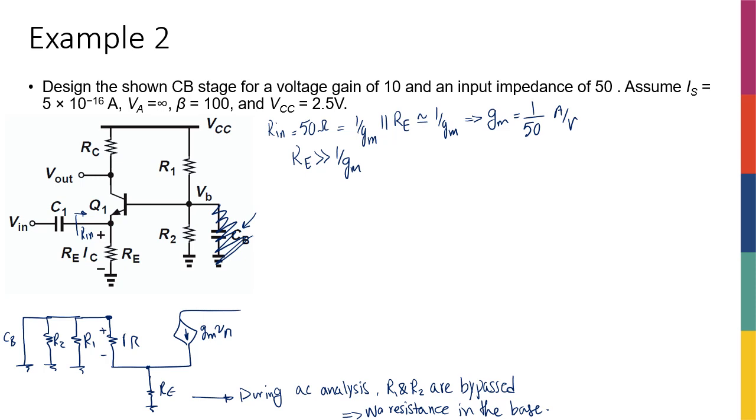Now, knowing this, I can actually know my current, my bias current. Therefore, IC is equal to, basically, GM is IC over VT. So GM is equal to IC over VT. From these two I can say that IC is just going to be GM times VT, VT being 26 millivolts. I'm going to have an IC that is 0.52 milliamps.